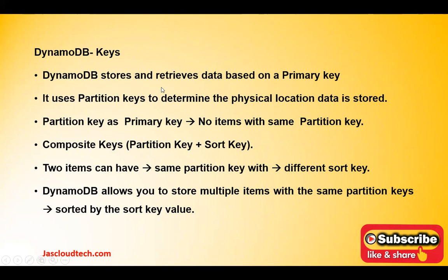DynamoDB stores and retrieves data based upon the primary key. The primary key is also known as the partition key, and it is supported by a sort key to determine the physical location where the data is stored. When we combine the partition key and the sort key, it becomes a composite key.